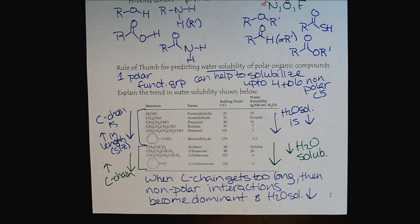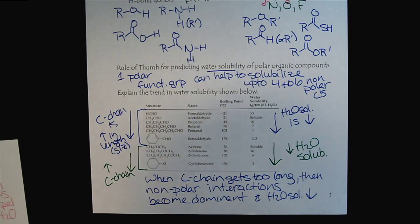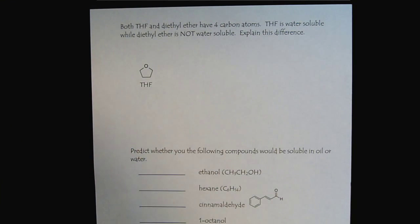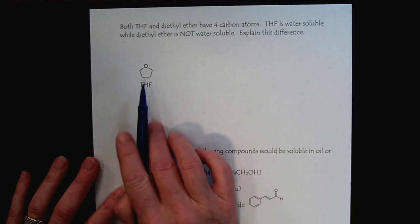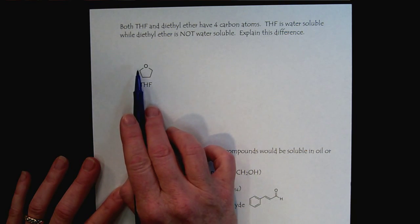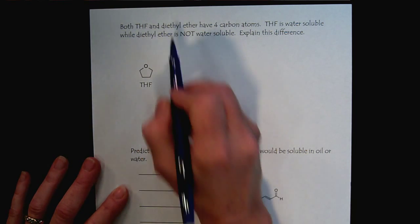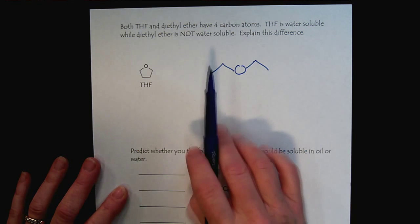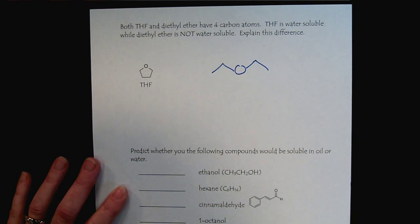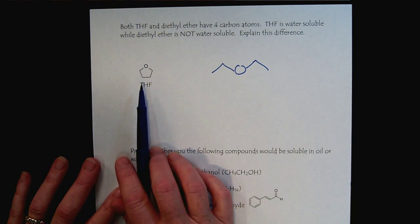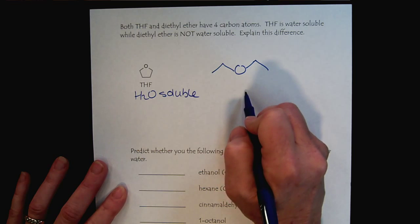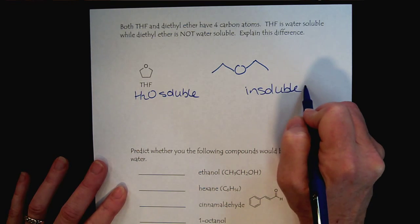Let's look at another example to reinforce this concept. Here's the chemical formula for THF, which has four nonpolar carbons, and diethyl ether, with our two ethyl groups — also four nonpolar carbons. The interesting thing is that THF is water soluble, however diethyl ether is insoluble in water.